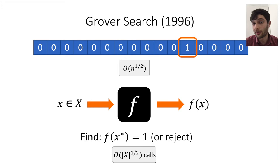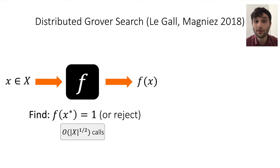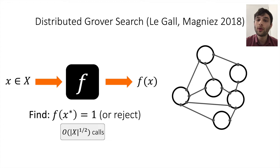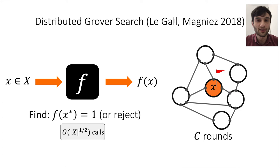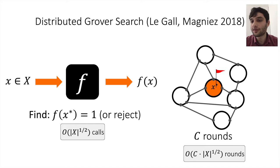How do we use Grover search in the distributed setting? We can abstract the black box f as a distributed algorithm. We choose some arbitrary leader in the graph to lead the Grover search. Given some x from the domain, the leader runs some algorithm that takes c rounds, after which the leader knows f(x). If we want to find some x* where f(x*) = 1, the leader can do this by locally simulating Grover search using c times √(domain size) rounds of communication.